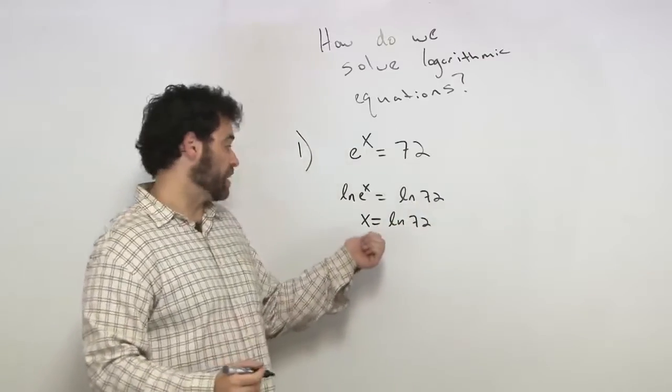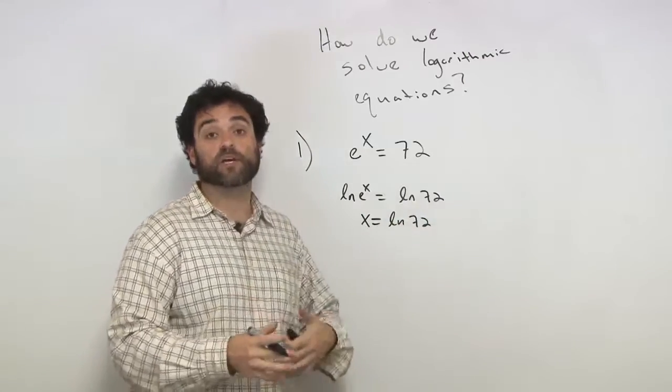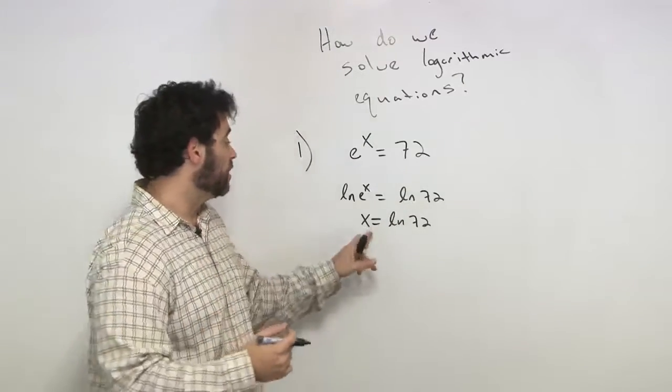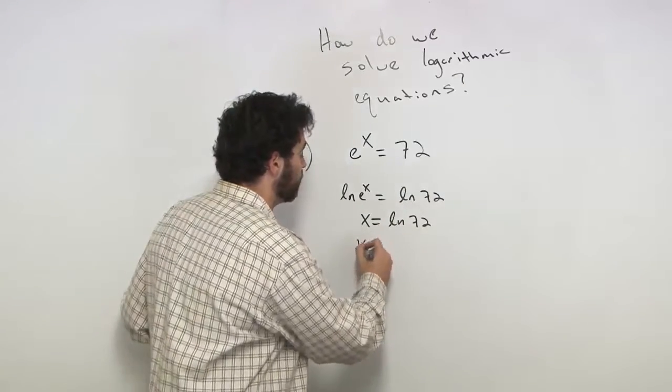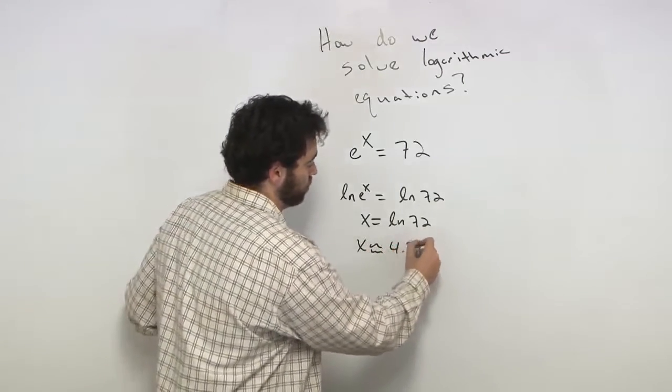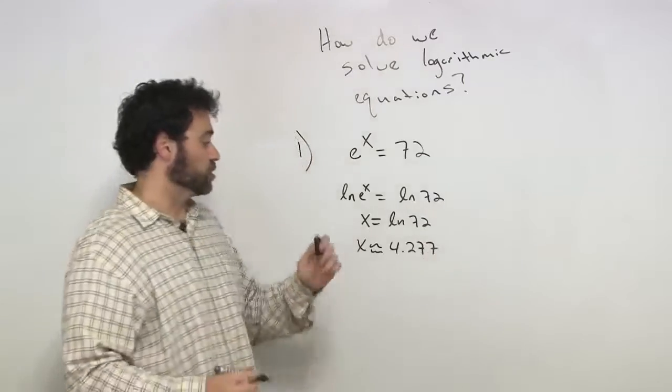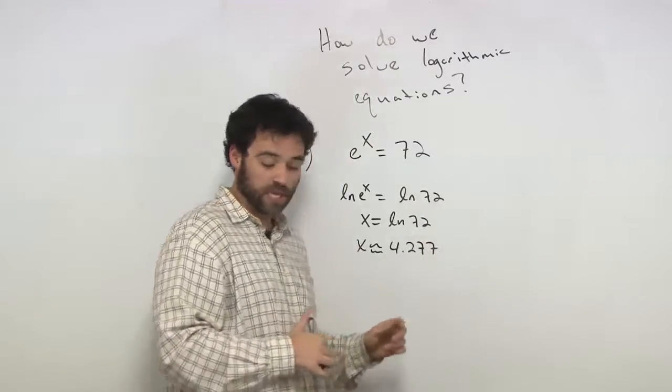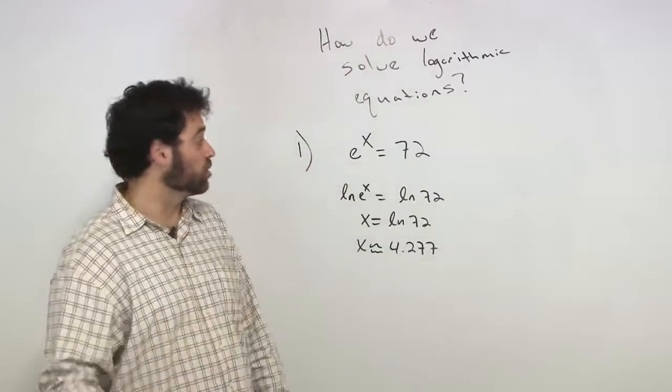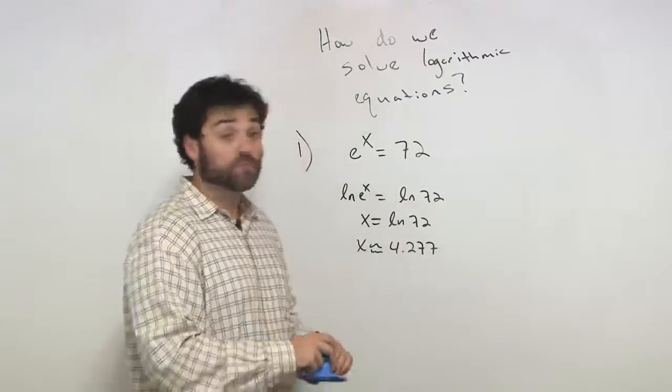And you say, now you type that into your calculator, your scientific calculator, your graphing calculator. You type that in, and what do we get? We get x is approximately, remember, that's approximately 4.277. So there's your answer. And those are approximations. Very good, using e to the x in natural log. Let's look at some more of these. We're solving natural log equations.